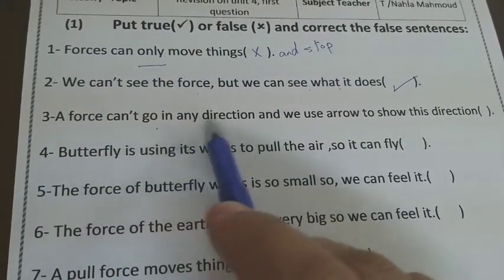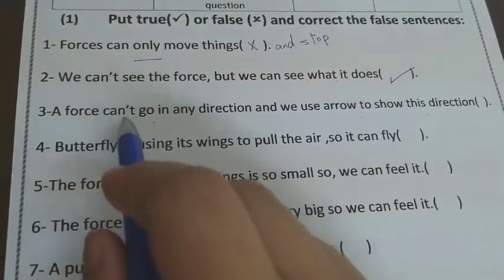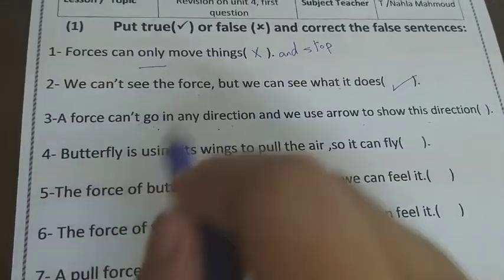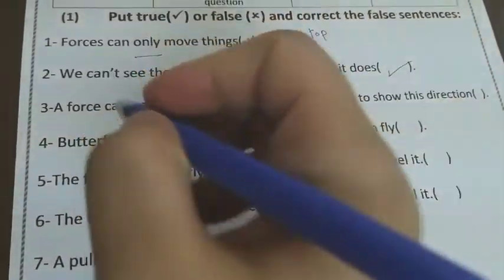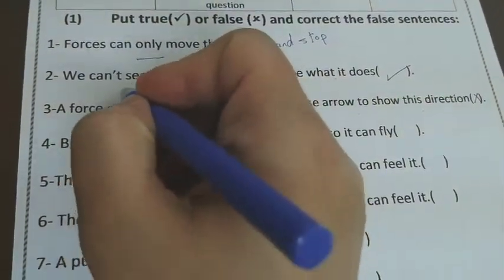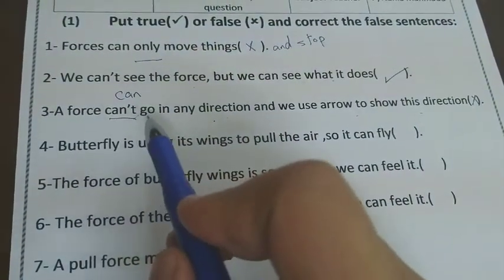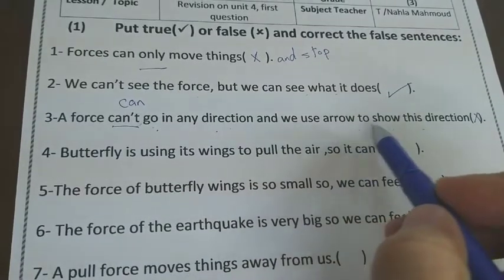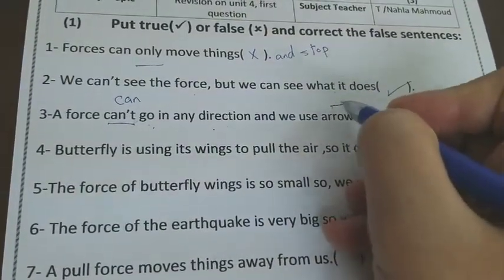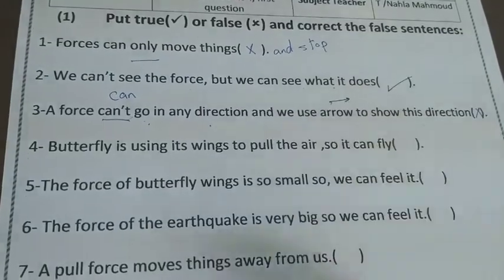Number three, a force can't go in any direction and we use arrow to show this direction. A force can't go in any direction or the force can go in all directions, in any direction. So this will be false. And we underline can't and write can. So a force can go in any direction and we use arrow to show this direction. Arrow, you remember? Like this or like this or any direction we want.